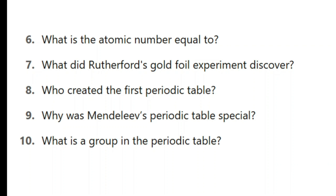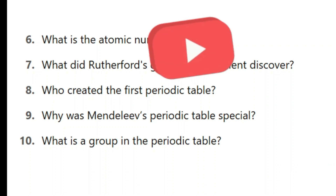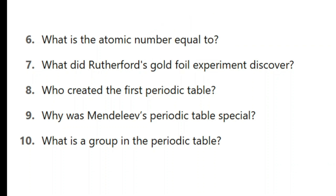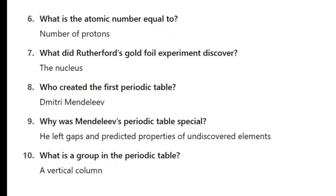Here are the next five questions. Please pause the video and do the questions. Here are the answers. What is the atomic number equal to? It is the number of protons. For example, in carbon 6, 12, the 6 is the atomic number and the 12 is the mass number. What did Rutherford's gold foil experiment discover? The nucleus.